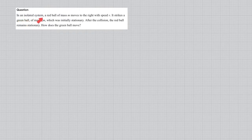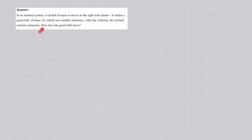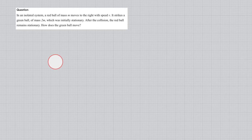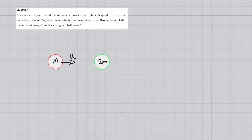This question says: in an isolated system, a red ball of mass m moves to the right with speed v. It strikes a green ball of mass 2m that is initially stationary. After the collision, the red ball remains stationary. How does the green ball move? Looking at this scenario, before the collision the red ball has mass m moving at velocity v, and the green ball of mass 2m is not moving.